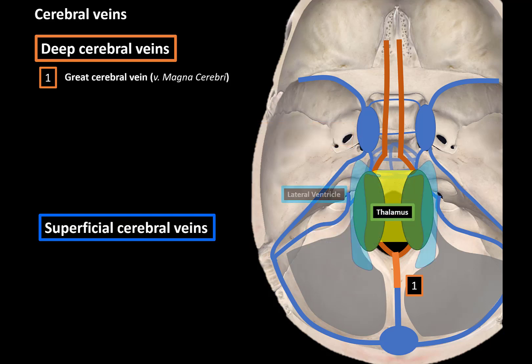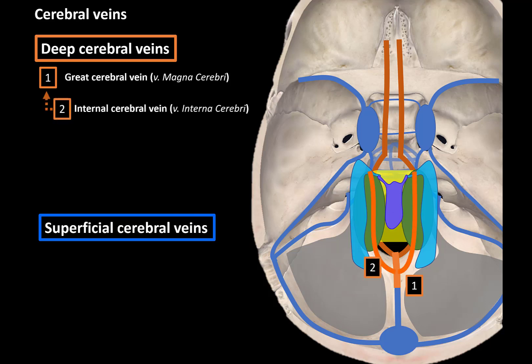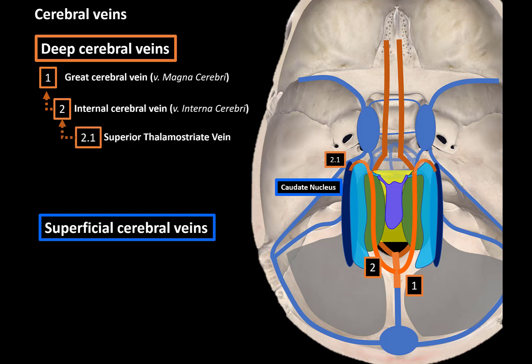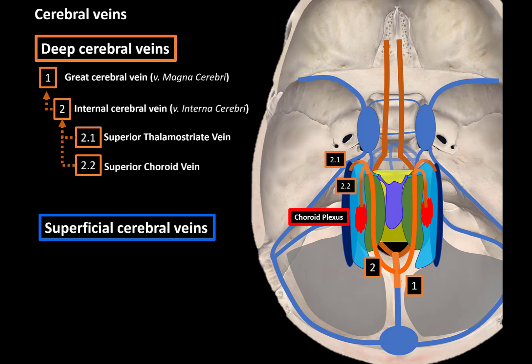Let's build on this model and add the thalami, the lateral ventricles, and the third ventricle. The next vein is the internal cerebral vein, located above the roof of the third ventricle. It collects blood from the basal ganglia, the internal capsule, and the choroid plexus through three main tributaries. The first is the superior thalamostriatal vein, which curves anteriorly and drains blood from the thalamus, the striatum, and the internal capsule. Next is the superior choroidal vein, which drains the choroid plexus of the lateral ventricles. Then we have the anterior vein of the septum pellucidum, which drains blood from the septum pellucidum and the head of the caudate nucleus.